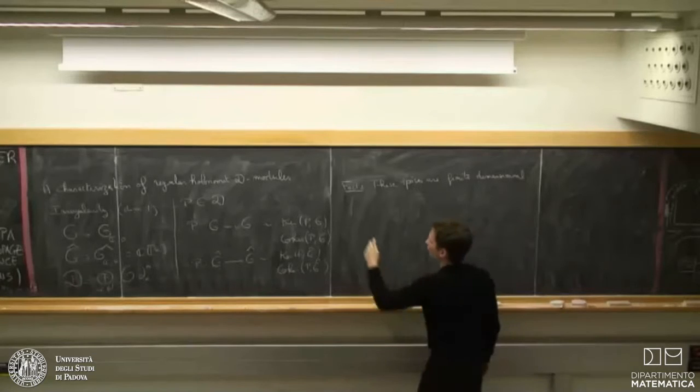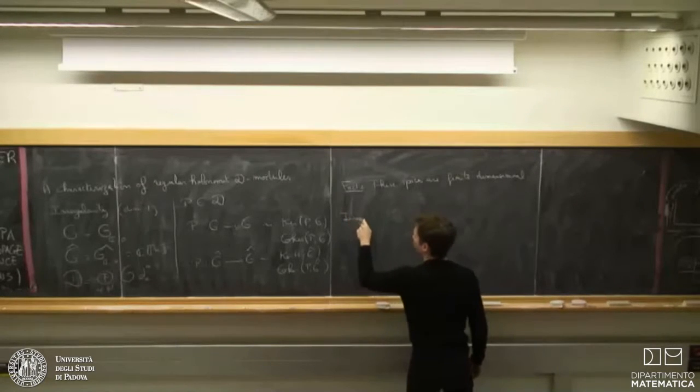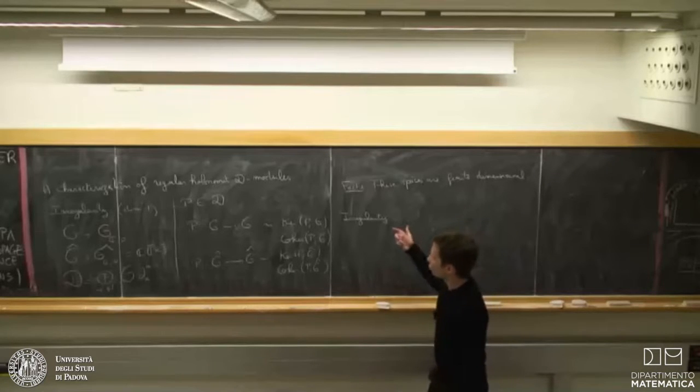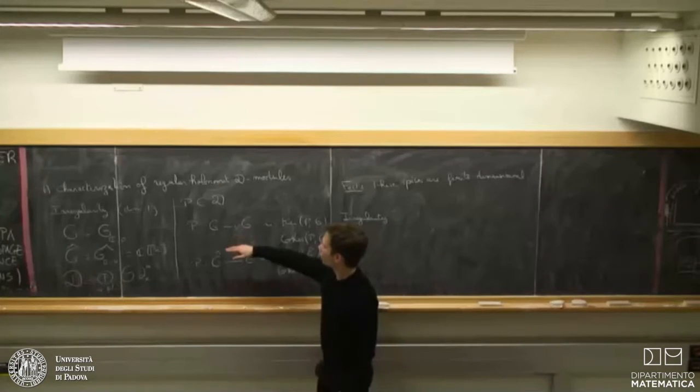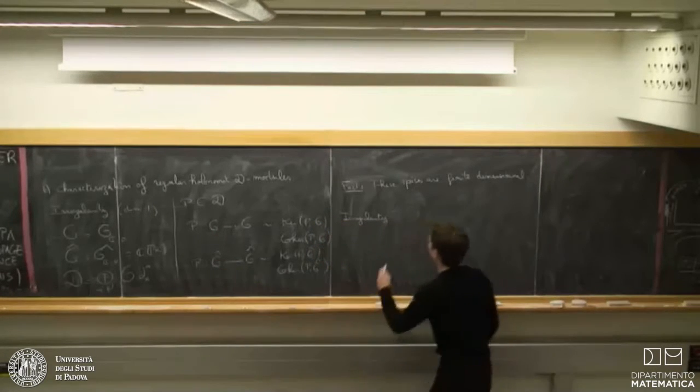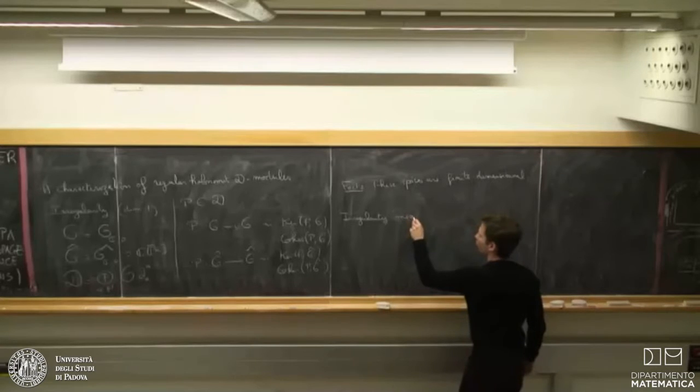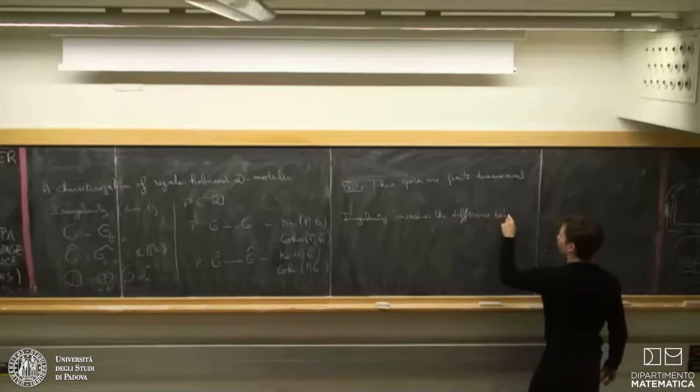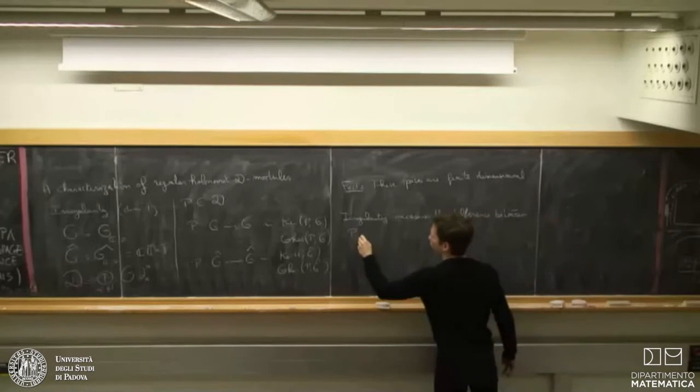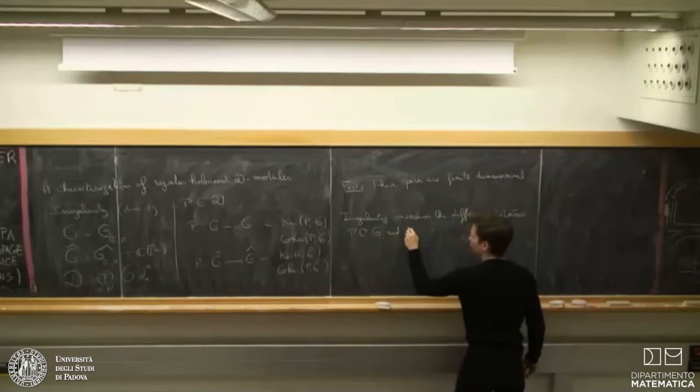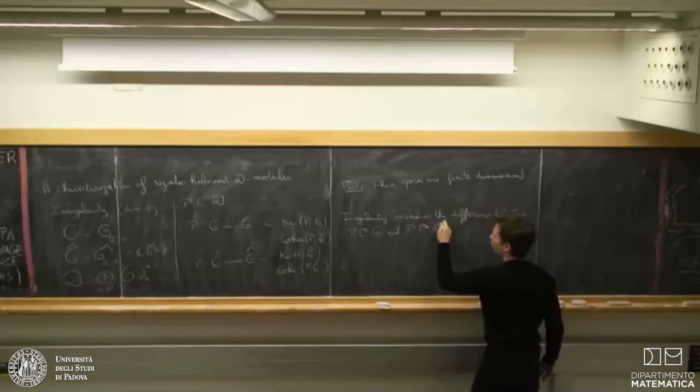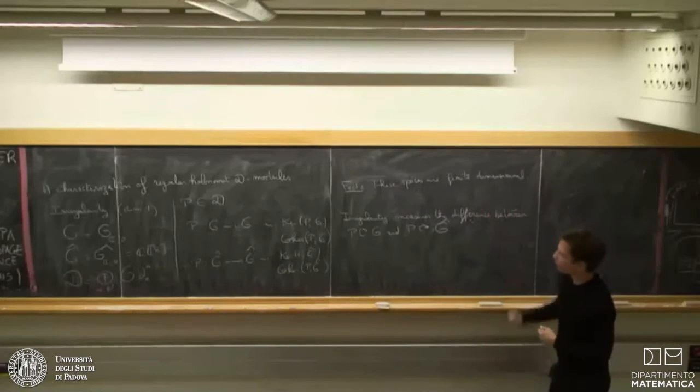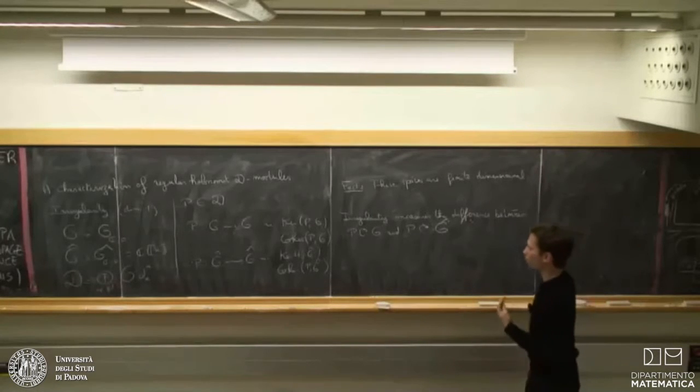And the irregularity phenomenon - irregularity will be a measure of the difference of the action of P on O and the action of P on O hat. So, irregularity measures the difference between the action of P on O and the action of P on O hat.